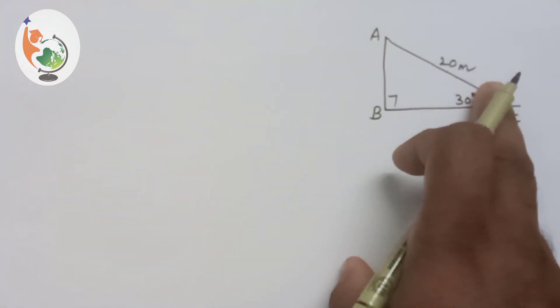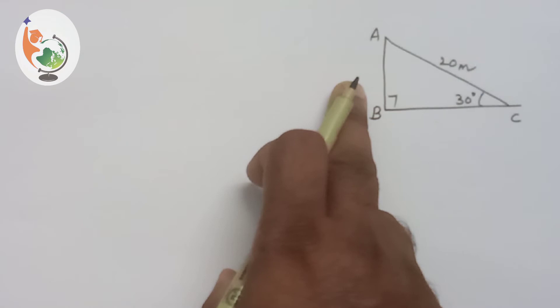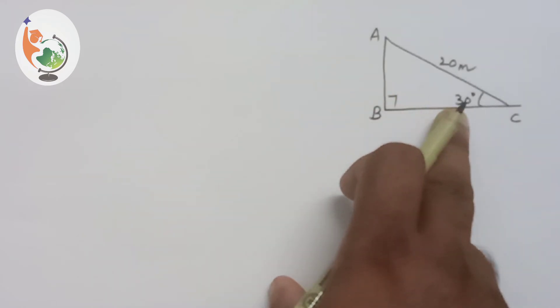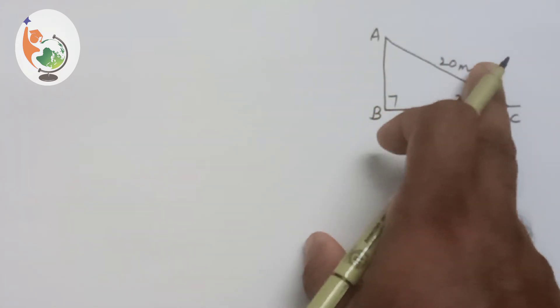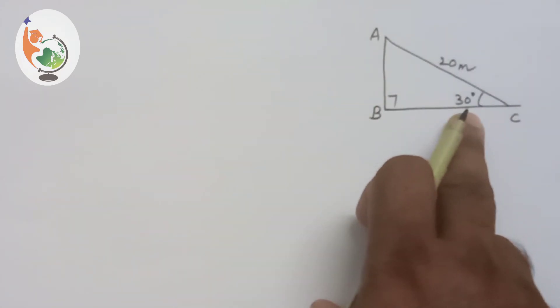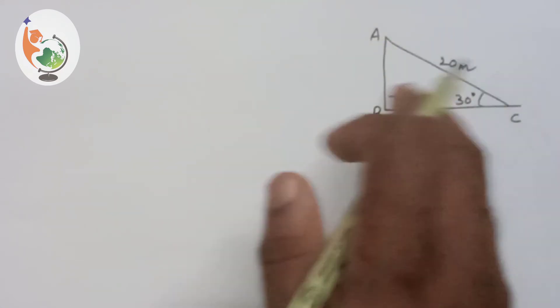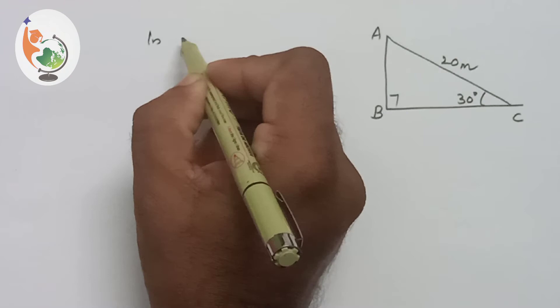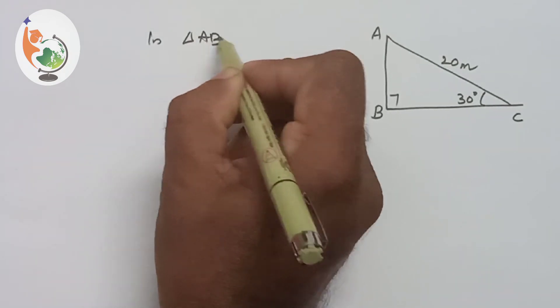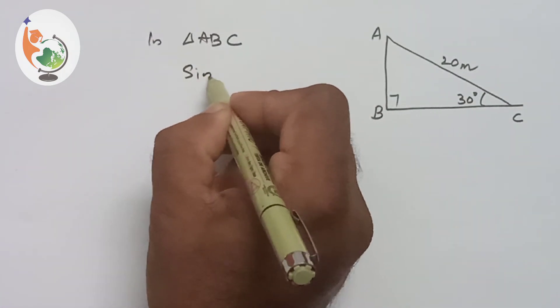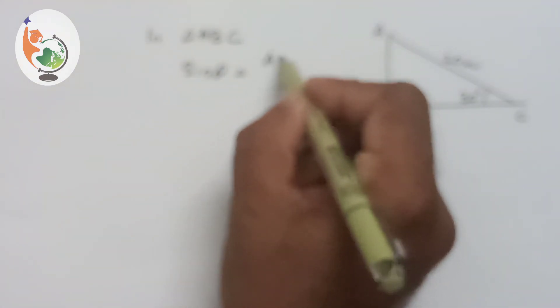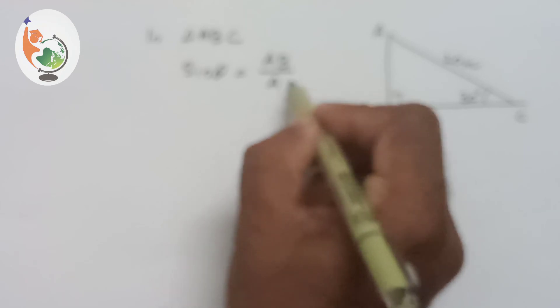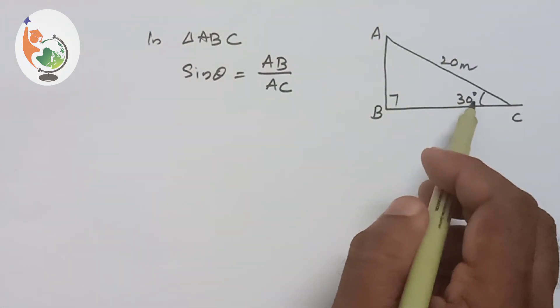So hypotenuse is given, we have to find the length of opposite side of 30 degrees. So the relation between opposite side and hypotenuse is sin 30. So we can write in triangle ABC, sin theta is equal to AB by AC. Here the angle is 30 degrees.